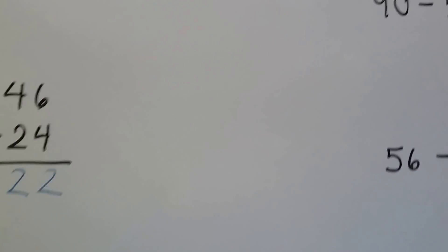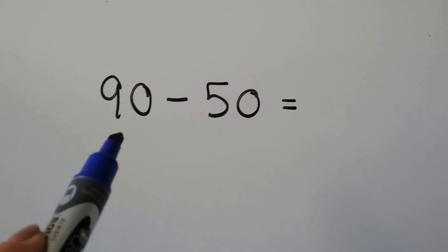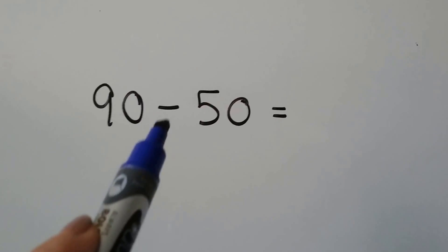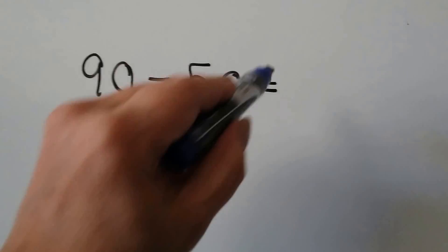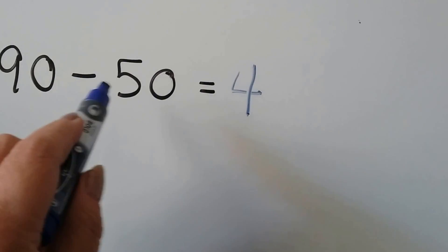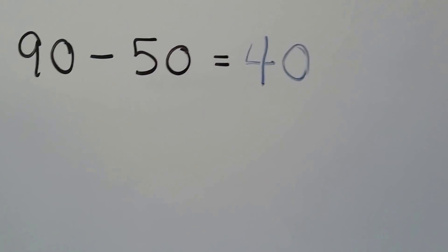If you remember, we did subtraction of 10s. We have 90 minus 50. This is 9 tens minus 5 tens. We think 9 minus 5. Well, that's a 4. So 9 tens minus 5 tens would be 4 tens. It would be 40.